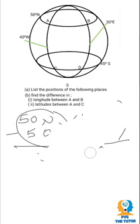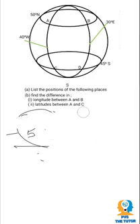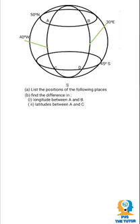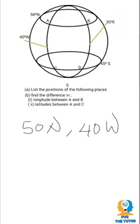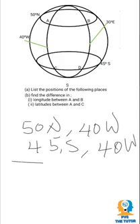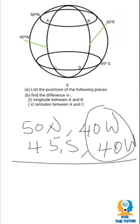Let's look at between A and C. A has a position of 50 degrees north and 40 degrees west, and C has 45 degrees south and 40 degrees west. The longitudes are on the same side, so when you subtract they give zero. But the latitudes are in different hemispheres, so we add to give us 95 degrees.